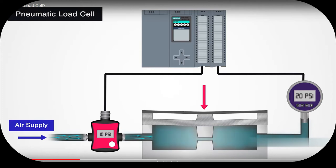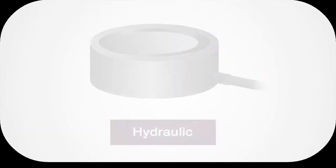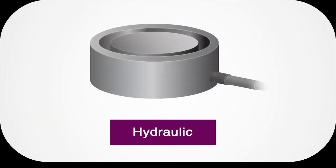The air required to balance out the weight determines how heavy the object is. The pressure gauge can then convert the air pressure reading into an electrical signal.